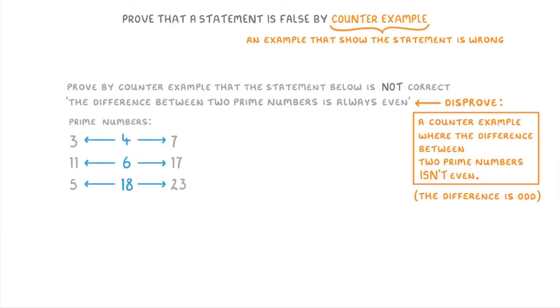And like we saw in the last example, nearly all prime numbers are odd.